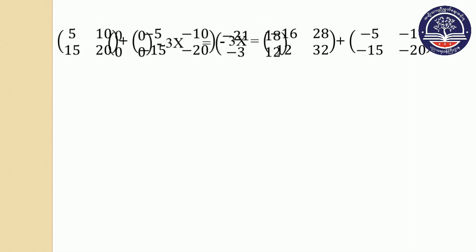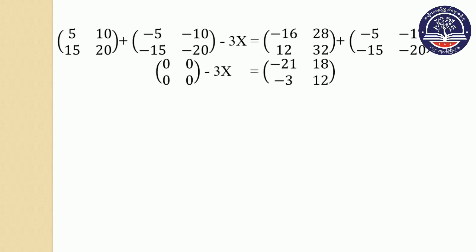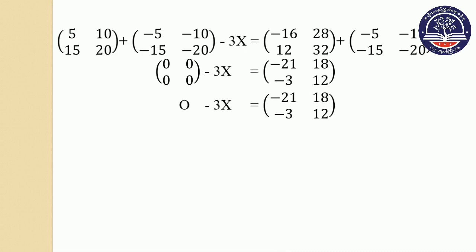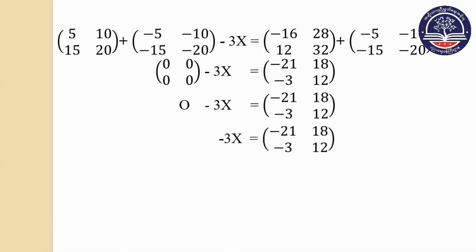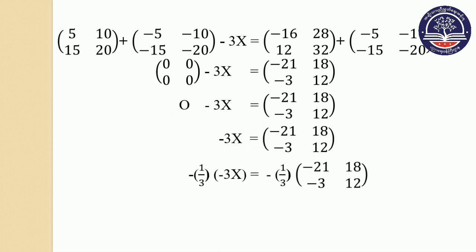The result is: minus twenty one, eighteen, minus three, two — yeah, valley zero metric. Minus three eight equal to minus twenty one, eighteen, minus three, two. We have two plus three minus three, we have two minus three, we have three minus three, minus four minus three.